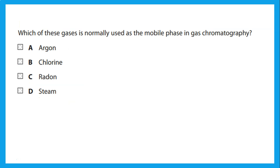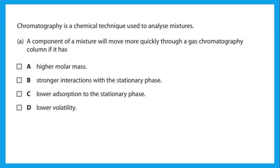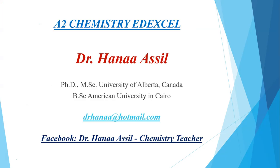In gas chromatography, the mobile phase is an inert carrier gas such as argon. The main reason a mixture is separated into its components is because they have different forces of attraction to the liquid stationary phase. The time taken for a substance to travel through the column is called the retention time. That is the end of this quick review of Unit 4 — good luck on your exam.